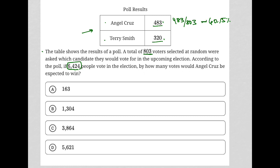Terry Smith received 320 out of 803, which is just the remainder — 39.85 percent — because the two percentages have to add up to 100 percent.